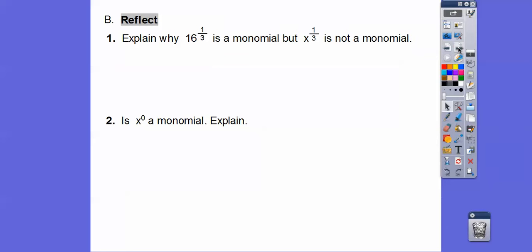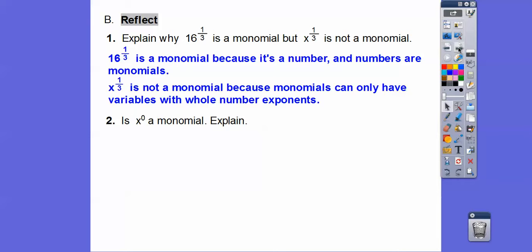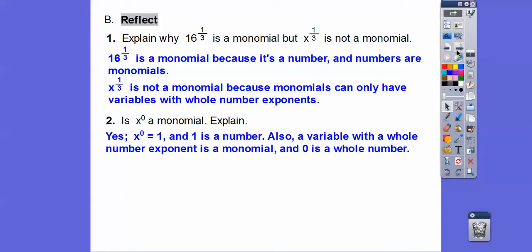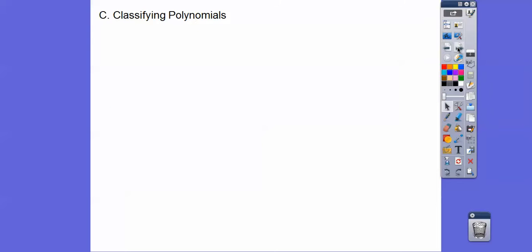So explain why 16 to the one-third is a monomial, but x to the one-third is not. Well, 16 to the one-third is just a number — the cube root of 16 — that's some number. Numbers are monomials, so that one's okay. But x to the one-third is not a monomial because you can't have a variable with a fractional exponent; it has to be a whole number. How about x to the zero? Remember, anything to the zero is one, and since one is a number, one is a monomial. Also, zero is a whole number exponent, so that one is a monomial.